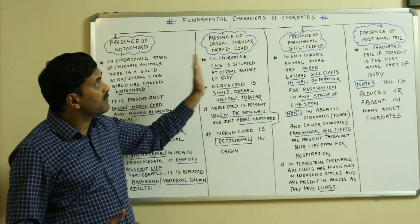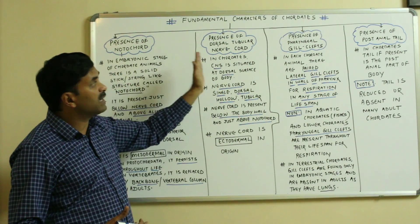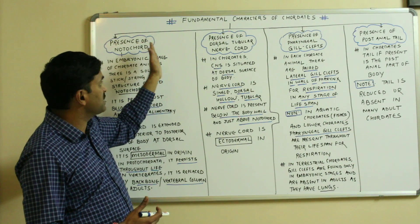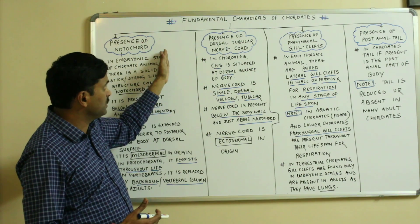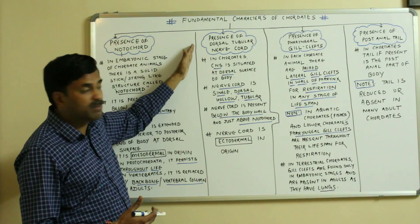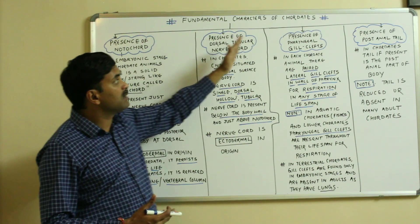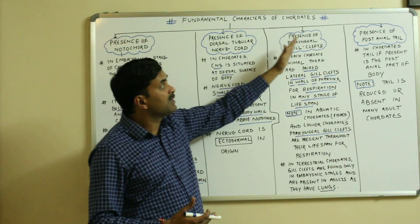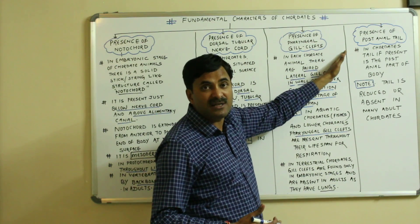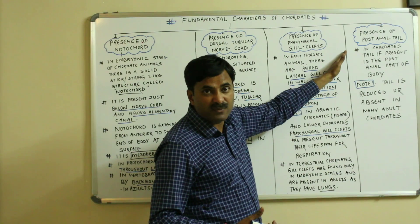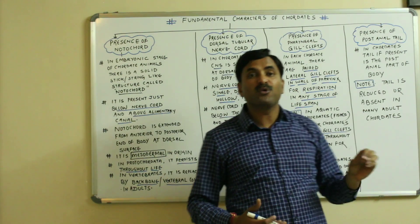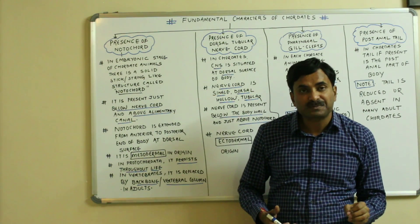So these were the four fundamental characteristics of the chordates. To repeat: the presence of the notochord, the presence of the dorsal tubular nerve cord, the presence of the pharyngeal gill clefts, and the presence of the post anal tail. We will be coming soon with more videos based on the chordates.